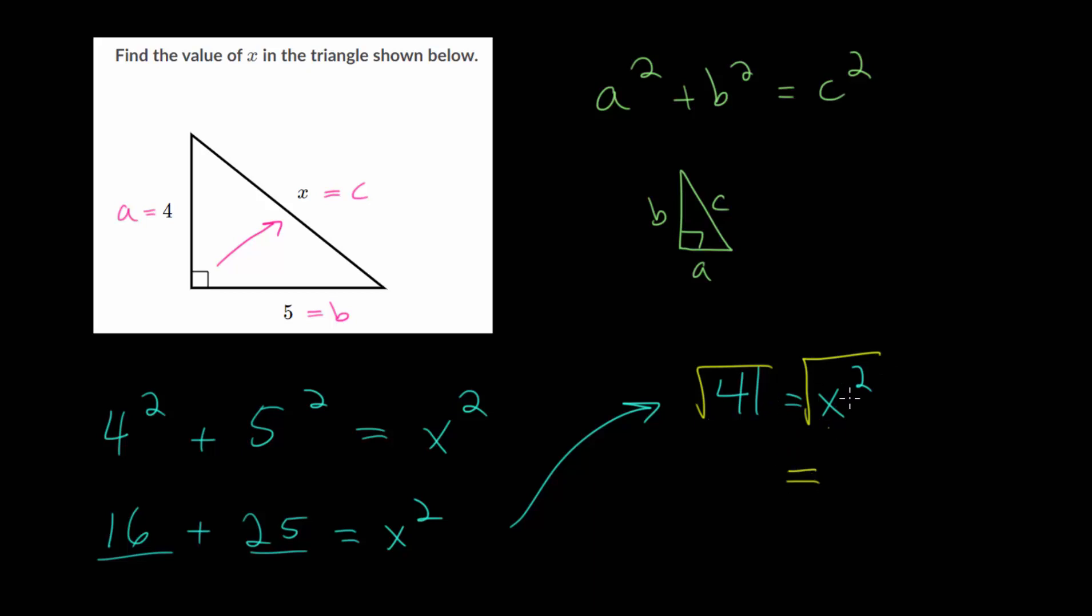So on the right-hand side, the square root and the square cancel, and we just get x, and usually when we do this, we would have to put plus or minus the square root of 41, but we don't care about the negative answer, since this is a physical side length, it has positive value.